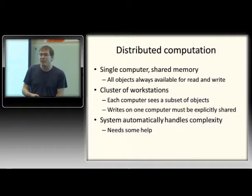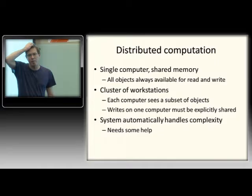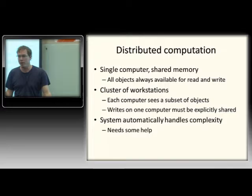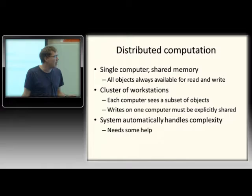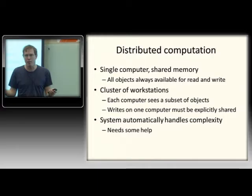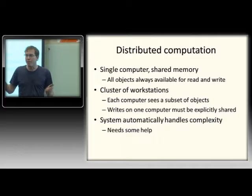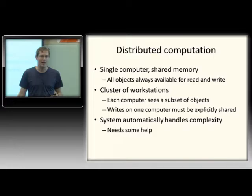Some basics for distributed computation: the kinds of problems we're going to have compared to what you get with a single computer with shared memory. Traditionally, when you write single-computer programs, most people use a shared memory model where all objects are always available for all threads to read and write concurrently. If you try to distribute this onto a cluster of workstations, it's very expensive. You could try to broadcast a copy of all objects to all computers and keep them in sync, but that would be expensive and would waste a lot of memory. You'd prefer each computer to see only a subset of the objects, and if one modifies one of those, you'd have to explicitly share that modification with the others who need to know.